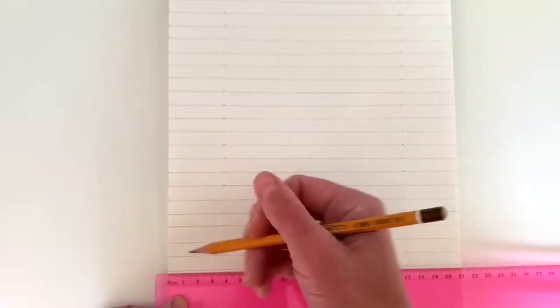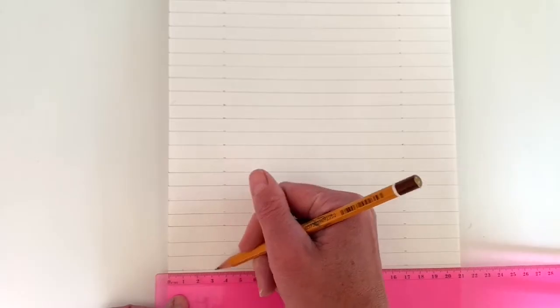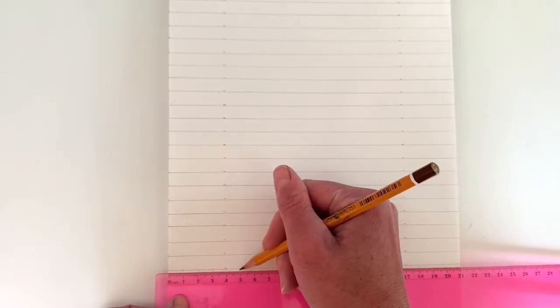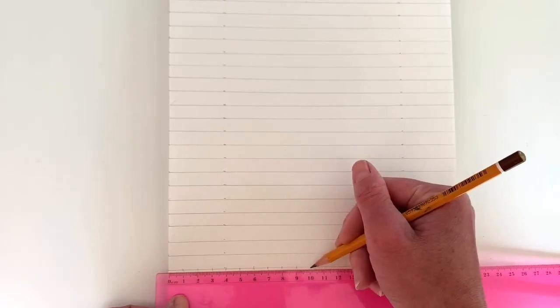We're aiming to make a grid, so now we need to make sure we have one centimeter gaps in the opposite direction. So choose one of the lines at the bottom of the page, mark your one centimeter gaps, and then do the same at the top of the page.